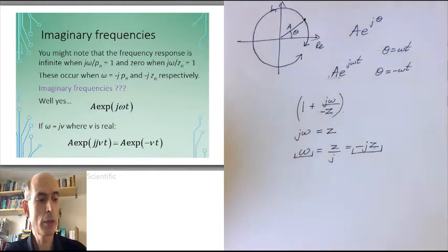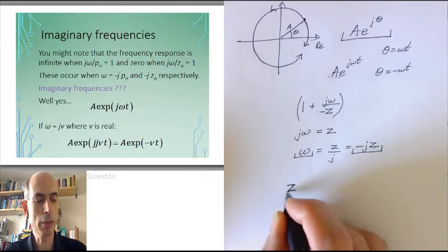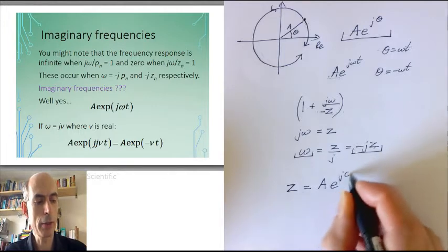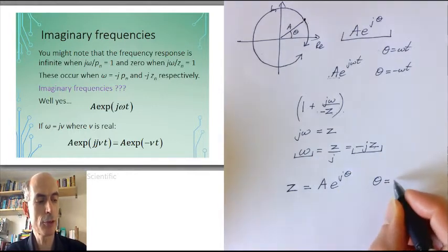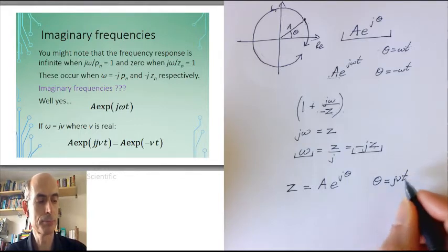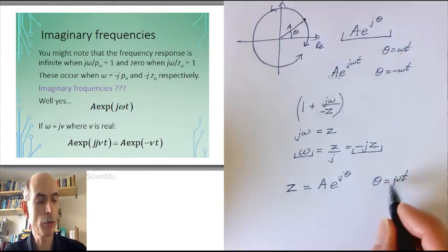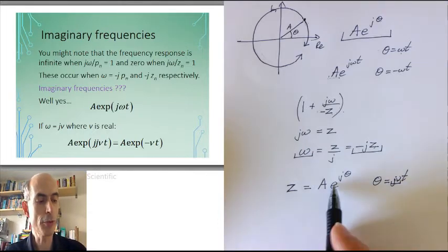Well, we can go back to this expression here and have a complex number z given by a e to the j theta. If theta is a complex frequency, then I could write it as, say, j nu times t, just replacing the omega in this expression with the imaginary term j nu.